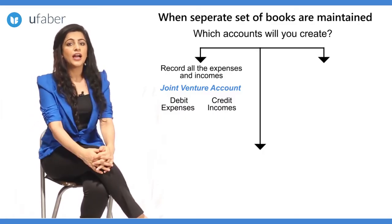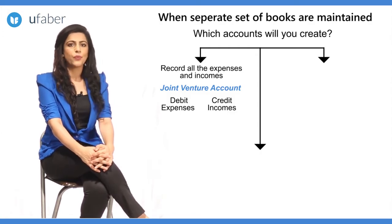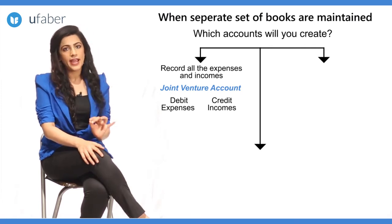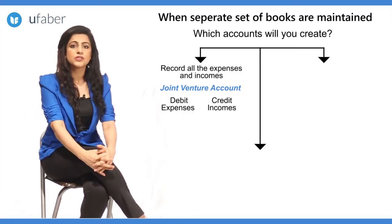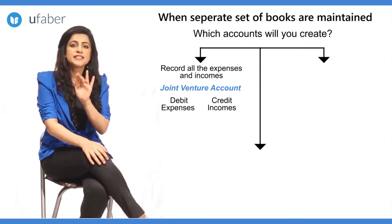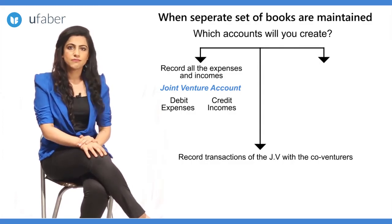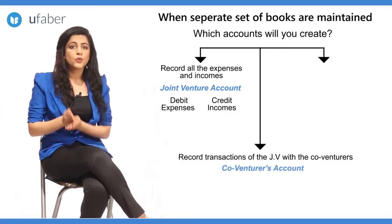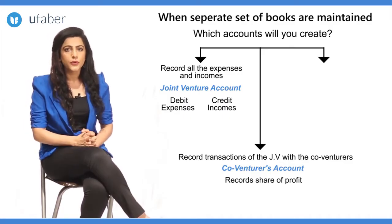The net result — either profit or loss — is transferred to co-venturers X and Y. Just as in partnership we have partners' capital accounts for transactions between the partnership and partners, the joint venture requires such an account for transactions with its co-venturers. Here we open co-venturers' accounts. The profit will be transferred to X's account and Y's account depending on the agreed ratio.